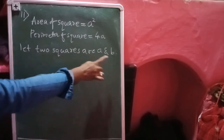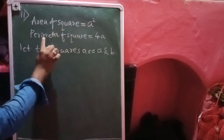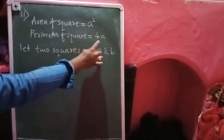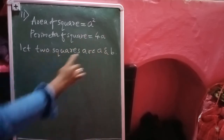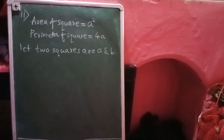Let the two squares be A and B. The formula for area of a square is a², and the perimeter of a square is 4a. But according to our question we should change it because there are two squares, so the area of the first square is a² and the second is b². Similarly, the perimeter of the first square is 4a and the perimeter of the second square is 4b.